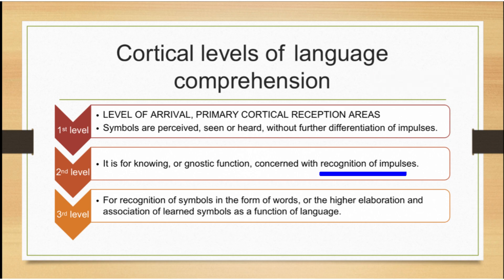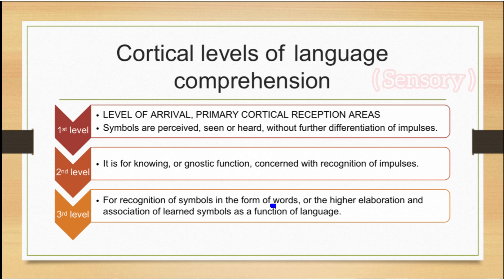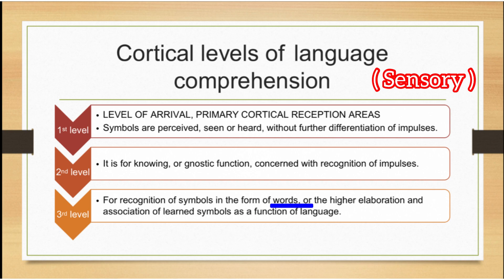The second level is for knowing or gnostic function and is concerned with the recognition of impulses. The third level is for recognition of symbols in the form of words, or higher elaboration and association of the learned symbols as a function of language.